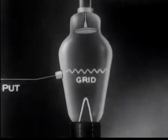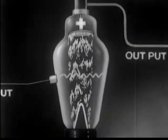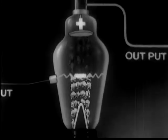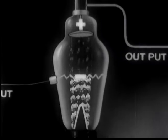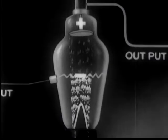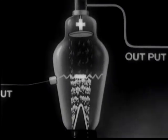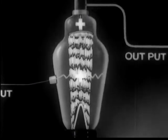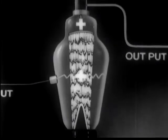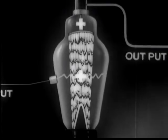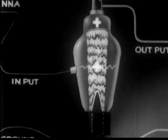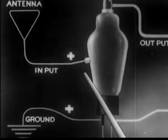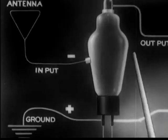Now let's see what happens. Every time a negative potential is impressed on the grid, even though it may be very minute, it has a large effect in reducing the number of negatively charged electrons which would otherwise keep flying from cathode to anode. Conversely, when the grid is positive, an equally large effect is exerted in increasing the flow of electrons from cathode to anode. The important thing to note is this: a small amount of power applied at the grid is amplified into a large amount of power in the anode or work circuit.